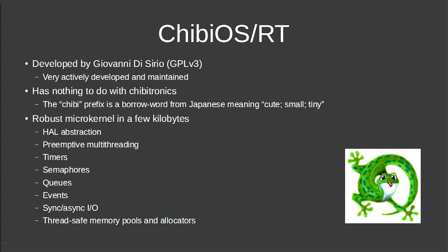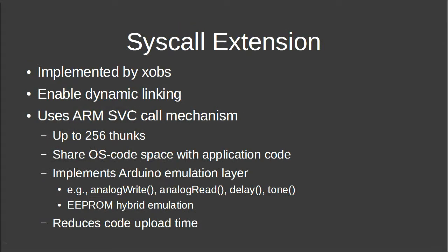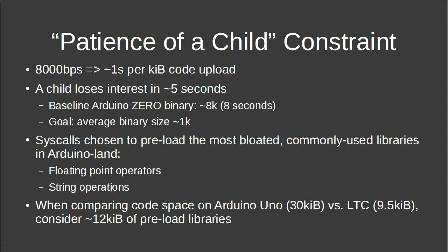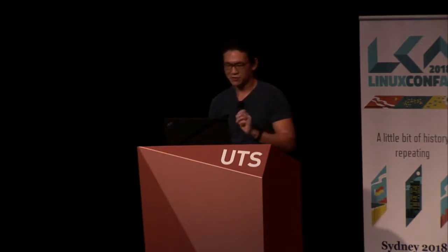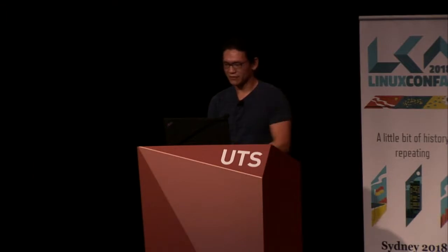We have what we call the 'patience of a child' constraint. At 8,000 bits per second, it takes about one second per kilobyte of code. An Arduino Zero binary is 8KB — that's eight seconds, and by then the kid's already walked away. So we had to compress typical binaries down to almost less than 256 bytes for the simplest examples. Hello World is actually very very small. A lot of hacking was done at the OS level to create essentially a dynamic linking library, pushing as many calls as possible out into the OS layer.